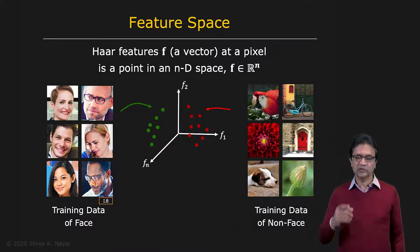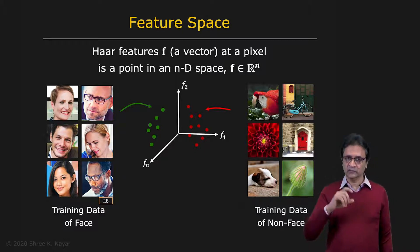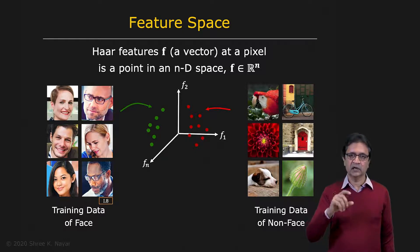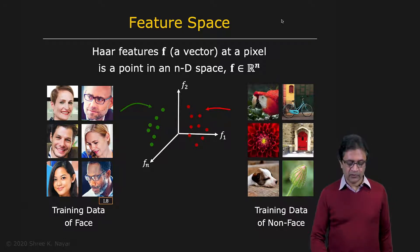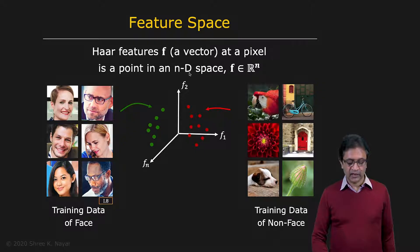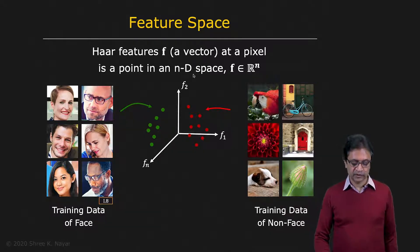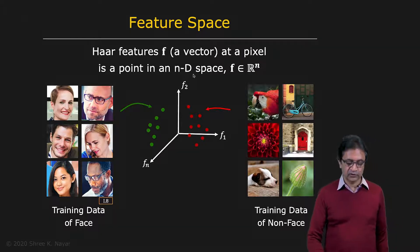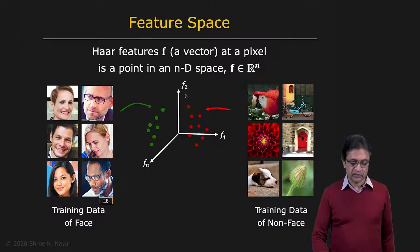We can represent a feature — in our case the Haar feature vector — as a point in n-dimensional space. If you have a Haar feature vector with n elements, that is nothing but a point in n-dimensional space. I can't show you an n-dimensional space, so I'm showing it as a three-dimensional space here with f1, f2, and fn.